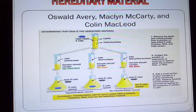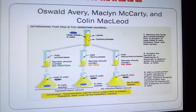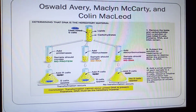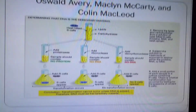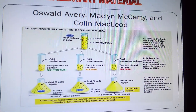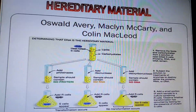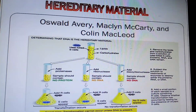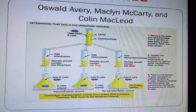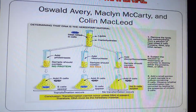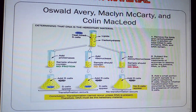The second experiment on hereditary material was conducted by Oswald Avery, Colin MacLeod, and Maclyn McCarty. They worked to determine that DNA is the hereditary material. First, they removed the lipids and carbohydrates from a solution of heat-killed S-cells, leaving proteins, RNA, and DNA remaining.